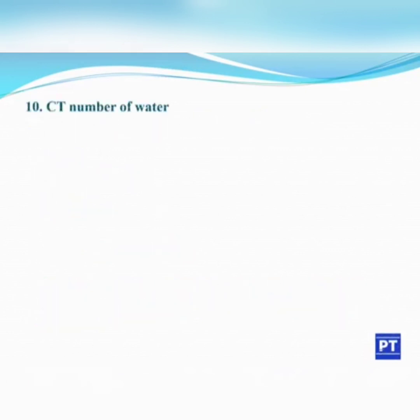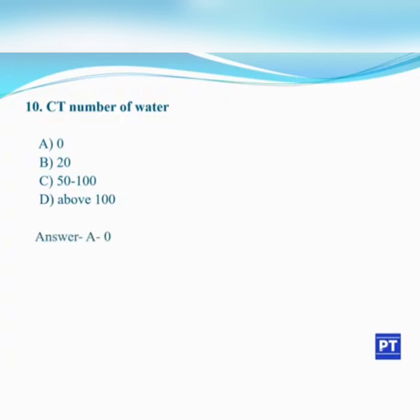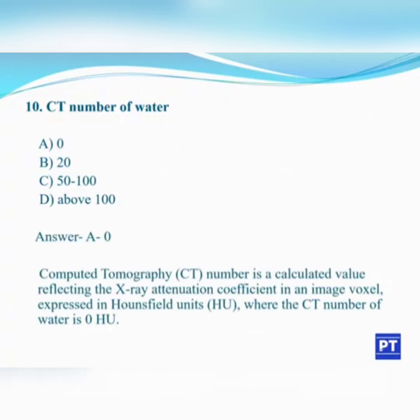Tenth question: what is the CT number of water? A. 0, B. 20, C. 50 to 100, D. Above 100. The answer is A, 0. The CT number reflects the X-ray attenuation coefficient in an image voxel, expressed in Hounsfield units (HU). The CT number of water is 0 HU.